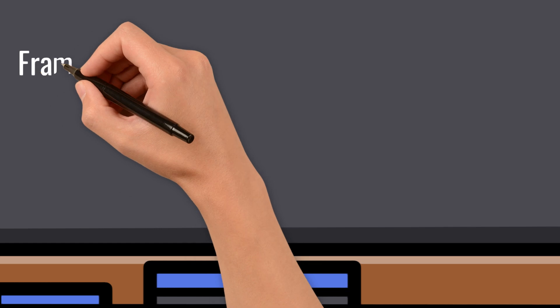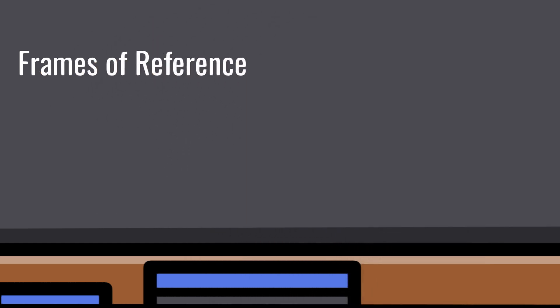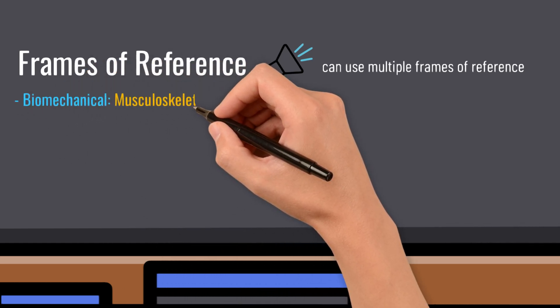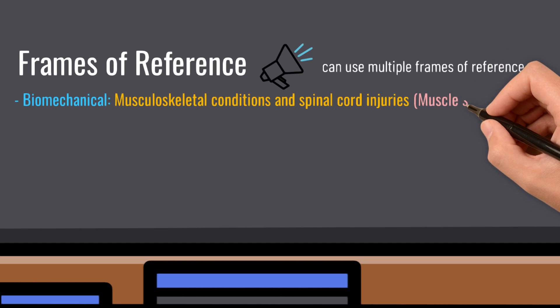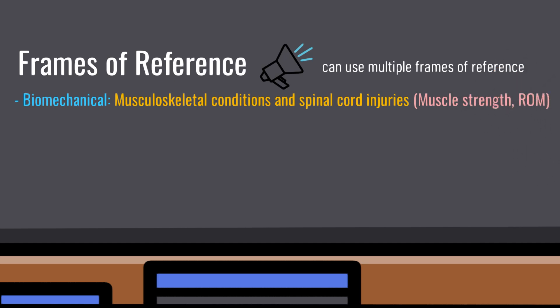Moving on to frames of reference — these inform the treatment principles used to achieve aims. Please refer to page 44 of the treatment manual for a full list of the frames of reference taught. Note that we can use multiple frames of reference to treat one client. The first, taught exclusively in the physical blocks, is the biomechanical frame of reference, used to treat musculoskeletal conditions and spinal cord injuries, focusing on client factors such as muscle strength and range of motion.